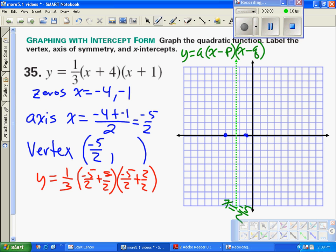All right, let's figure this out. So we've got equals 1 third times positive 3 halves times negative 3 halves.